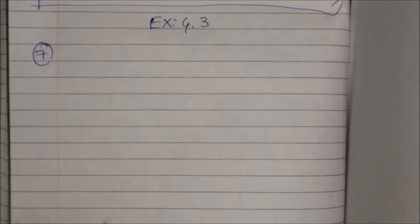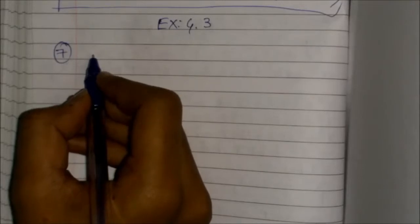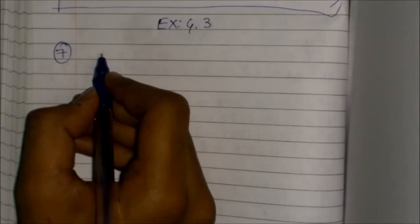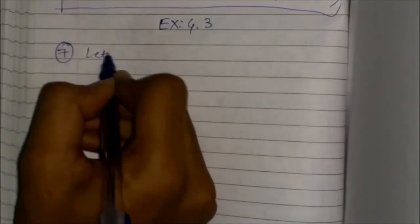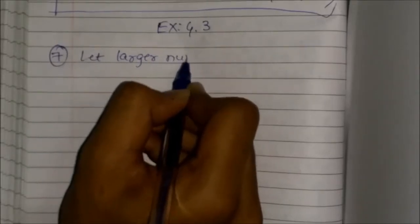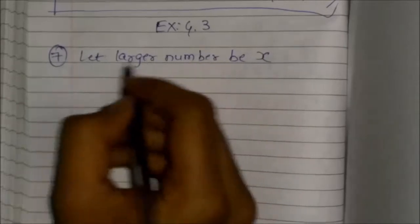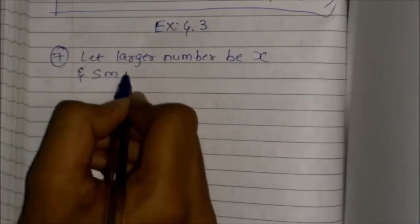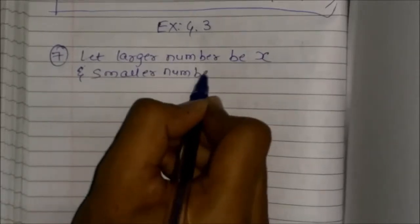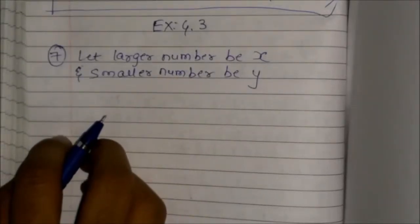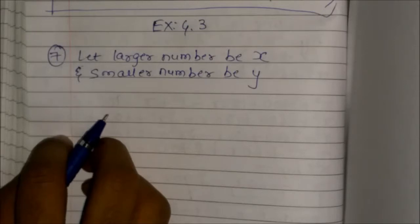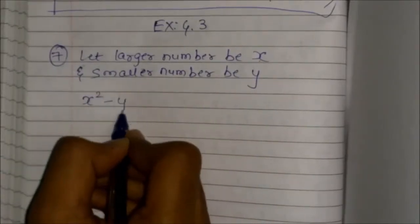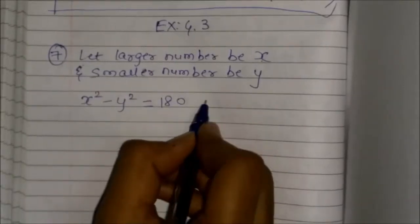Exercise 4.3, 7th question. They have given: the difference of squares of two numbers is 180. The square of the smaller number is 8 times the larger number. Let the larger number be x and the smaller number be y. The difference of squares gives us x² minus y² equals 180. This is equation 1.